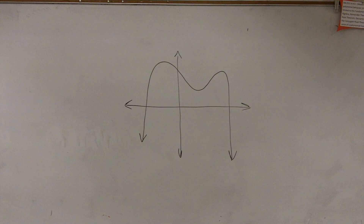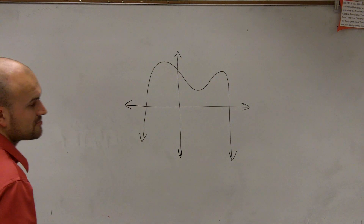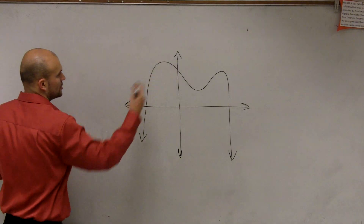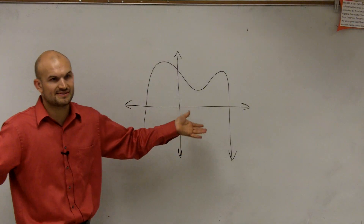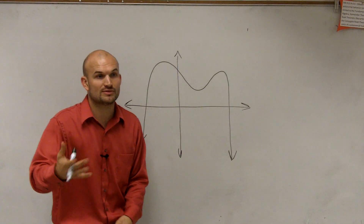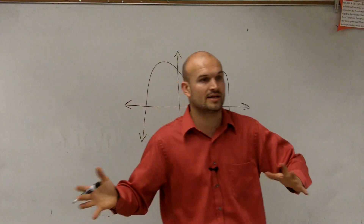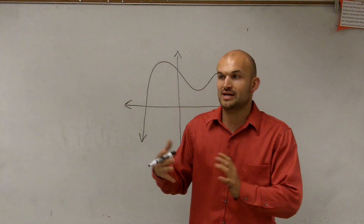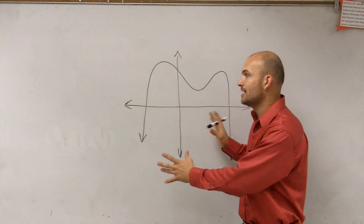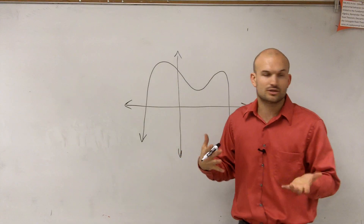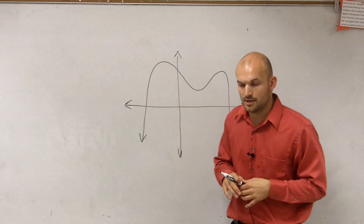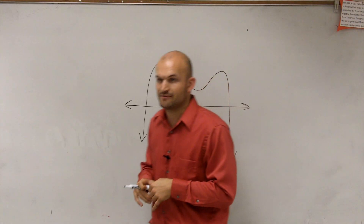All right, ladies and gentlemen. The first thing we're going to do is determine what our end behavior is. What we have right now is a polynomial, and we want to determine the end behavior. We wrote down the leading coefficient test, so you can use that to help determine your leading coefficient, your degree, and what the end behavior is going to be.